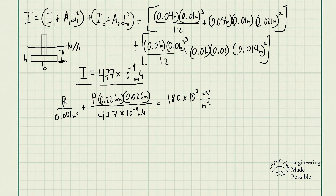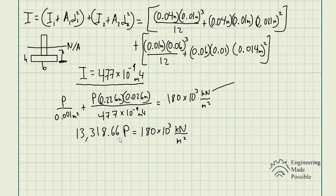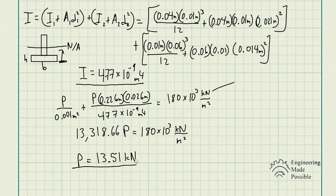Now that we have all the available information, let's plug everything into the equation. We have P divided by 0.001 m² plus P times 0.226 m times C (0.026 m) divided by the moment of inertia, equal to 180 × 10³ kN/m². Solving this gives 13,318.66 times P equals 180 × 10³, and solving for P gives a maximum P value of 13.51 kilonewtons.